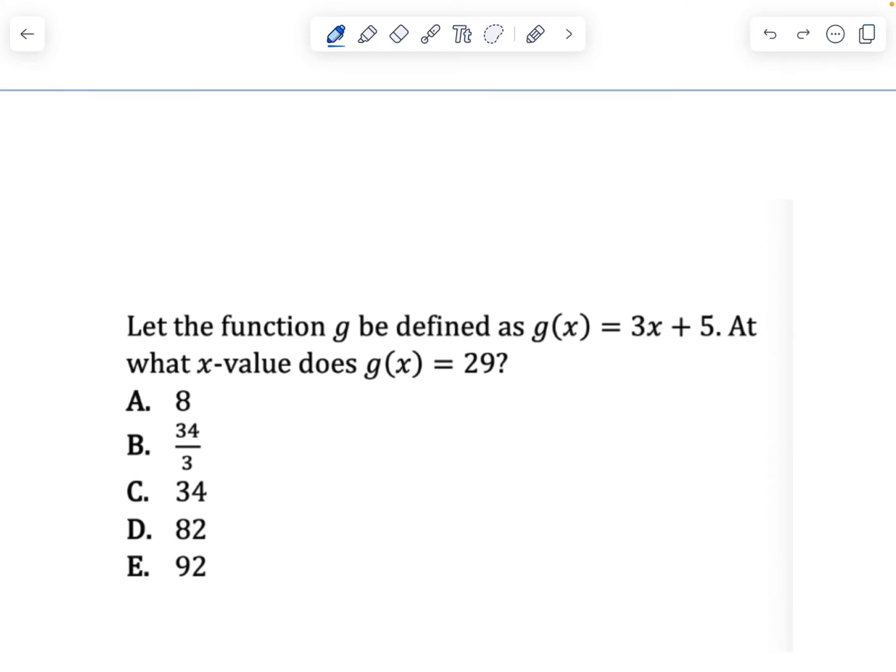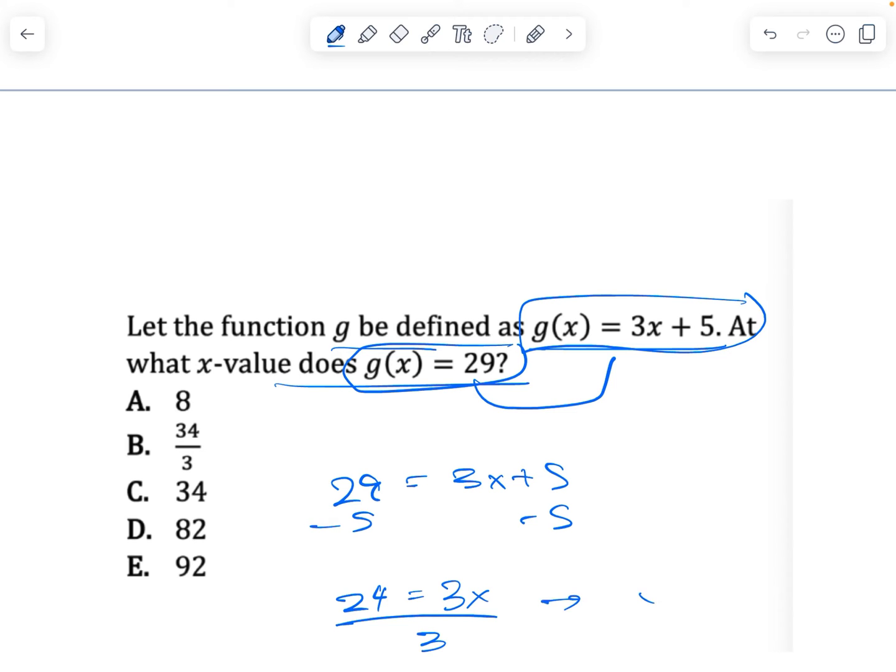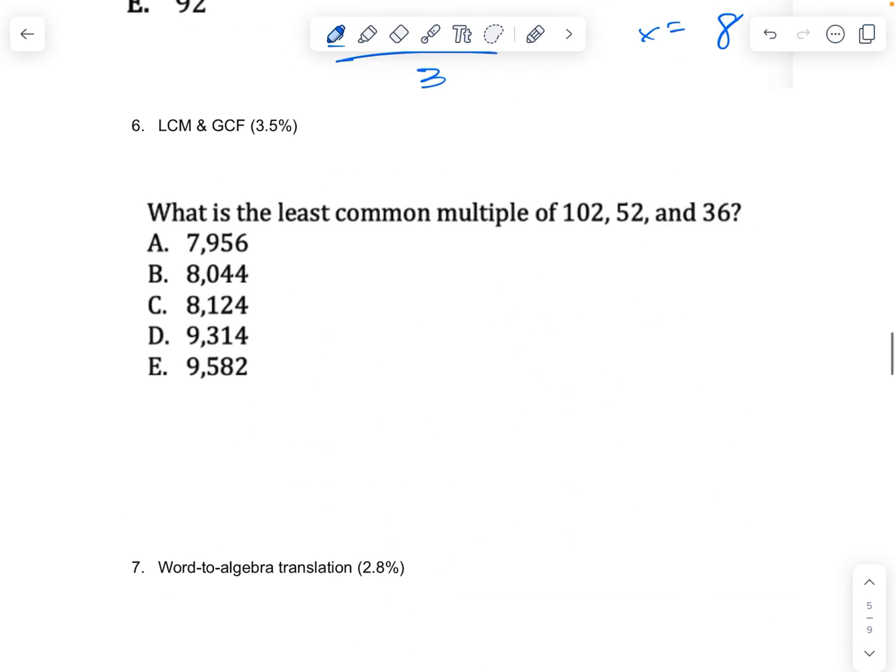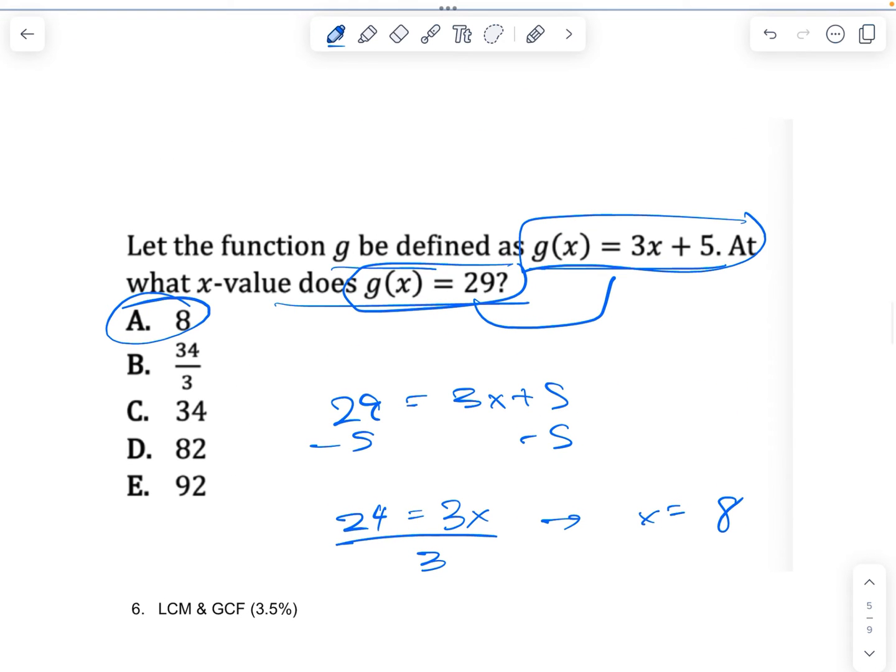Polynomials. Let the function g be defined as g(x) = 3x + 5. At what x-value does g(x) equal 29? When a problem is telling you that g(x) is equal to one thing and then g(x) is also equal to something else, that means it's telling you to make those two things equal to each other. 29 is equal to 3x plus 5. Then you just do the simple solution. Subtract 5 from both sides, you get 24 equals 3x. Divide both sides by 3, we get x equals 8. Remember, if you're given things to plug in, plug them in, make them equal to each other.